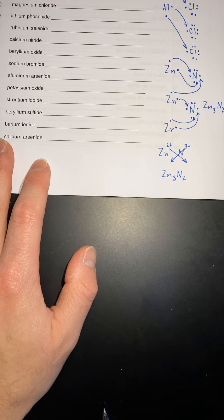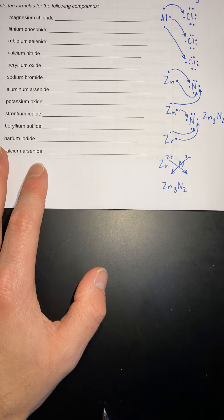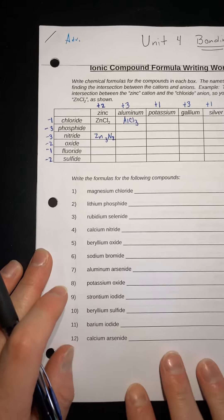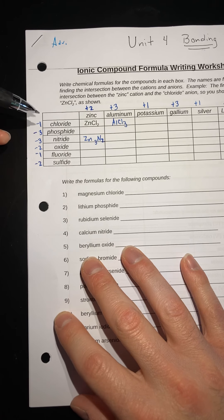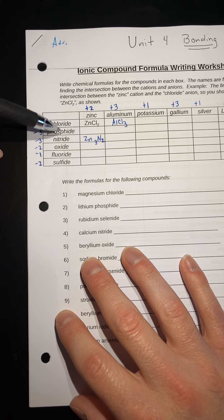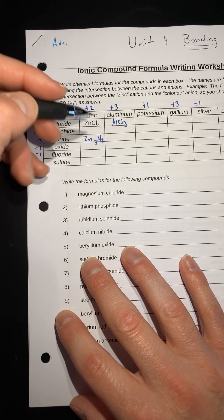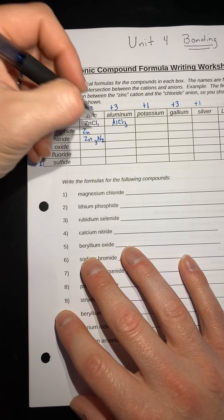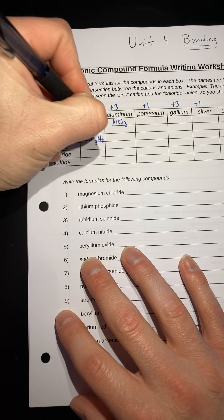Will transition metal charges typically be given to us? Yes, or you would be able to find it with what I give you. So here, zinc and phosphide: zinc is a positive two, phosphide is a negative three. If you crisscross those, you would get Zn3P2.